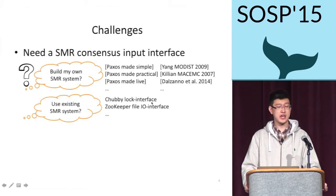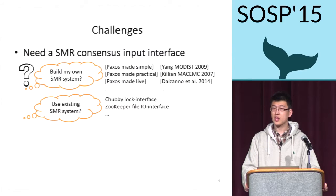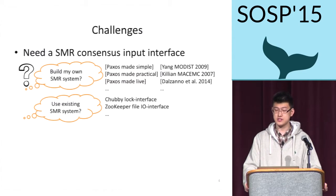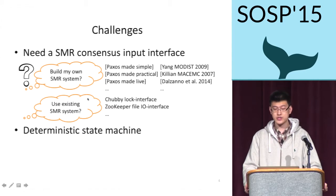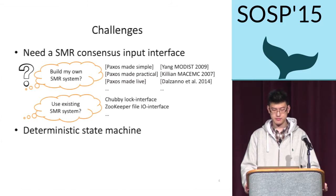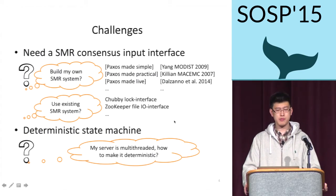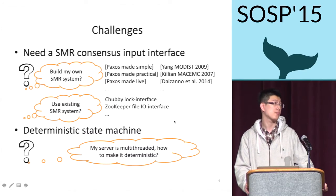You can also use existing SMR systems. There are two popular ones: Zookeeper and Chubby. However, they use either lock interfaces or file I/O interfaces, and shoehorning your existing program into these interfaces could be time-consuming and error-prone. Second, SMR requires your server to be a deterministic state machine to prevent execution states from diverging. Nowadays, almost all server programs are multi-threaded, which is non-deterministic. How do you make the server program deterministic?